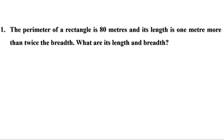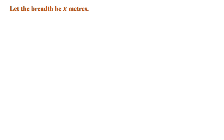Here we have to find length and breadth. One of them can be taken as x. I am going to take breadth as x, because length is given in terms of breadth. So let breadth = x. Given that length is 1 meter more than twice the breadth: twice the breadth is 2x, so 1 meter more is 2x + 1. Therefore, length = 2x + 1 meters.